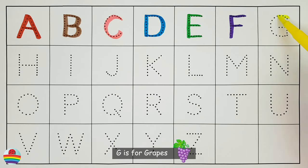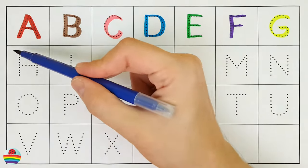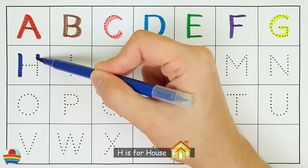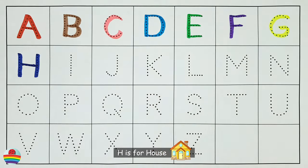G. G is for grapes. G. H. H is for house. H.